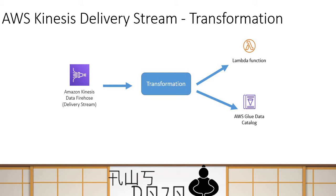When delivering data through a delivery stream, you sometimes need to transform it. There are two methods: using a Lambda function or using a Glue Data Schema. With Lambda you can do any kind of transformation — for example, converting CSV into JSON or JSON into another format — because you're writing your own code.